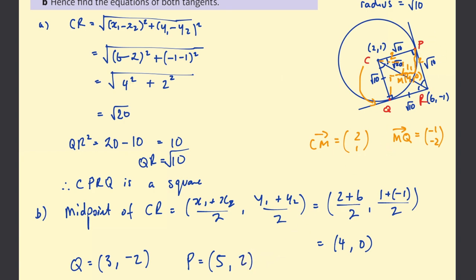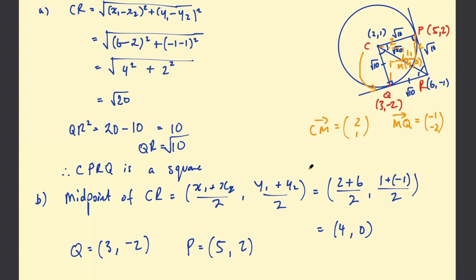So now we have Q and P. P is (5,2) and Q is (3,-2). Now we have two points on each line. It's hopefully pretty straightforward to find those equations.